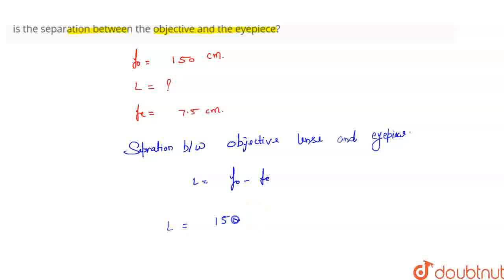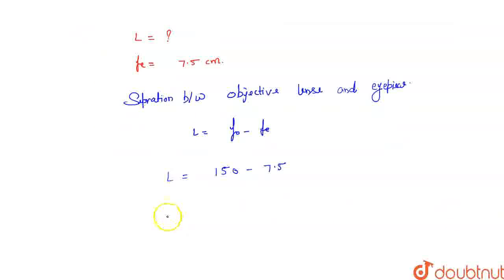150 minus Fe, which is 7.5. So here L is 142.5 cm. So we had to find out that the separation between the objective lens